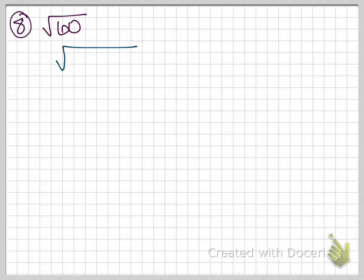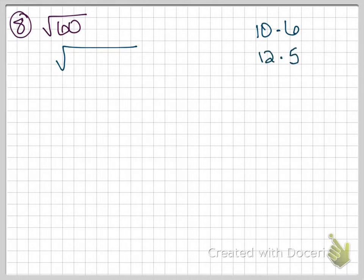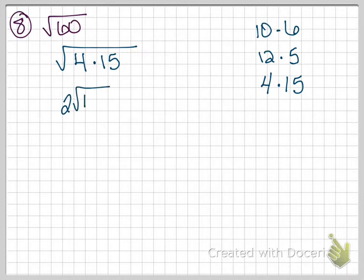Number eight: simplify the square root of 60. We need to find the largest perfect square factor. Breaking 60 into 4 times 15 works because 4 is a perfect square. The square root of 60 becomes the square root of 4 times 15. Taking the square root of 4 gives 2, so the final answer is 2 times the square root of 15.